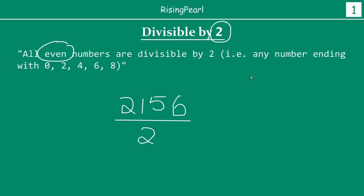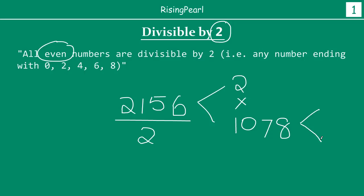Now, why do we need this? Remember, like in the last video, we were talking about how to find prime factors of any given number. So if I have to find the prime factors of 2156, I need to know where to start. Using divisibility rules will come in really handy. So simply, you will say that 2156 can be written as 2 times 1078. And because 1078 ends with 8 and is an even number, it can again be divided into 2 times something.